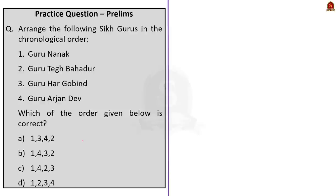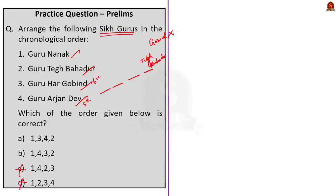Question 4: Arrange the following Sikh Gurus chronologically — Guru Nanak, Guru Tegh Bahadur, Guru Har Gobind, Guru Arjan Dev. Since Guru Gobind Singh is not in the list and he is the last Sikh Guru, Guru Tegh Bahadur — his father, the 9th Sikh Guru — will come last. This allows us to eliminate options C and D. Guru Arjan Dev was the 5th Sikh Guru and Guru Har Gobind was the 6th, and Guru Nanak was the 1st. So the correct chronological order is 1, 4, 3, 2 — meaning Guru Nanak, Guru Arjan Dev, Guru Har Gobind, Guru Tegh Bahadur. The correct answer is Option B. I have given here the list of the Sikh Gurus in chronological order — also note the contemporary Mughal ruler to each Sikh Guru, which will be very helpful in your prelims examination.